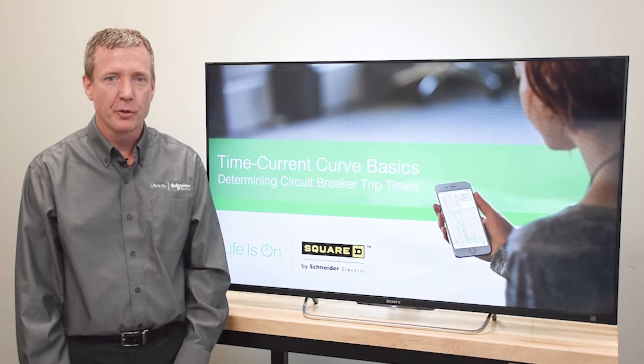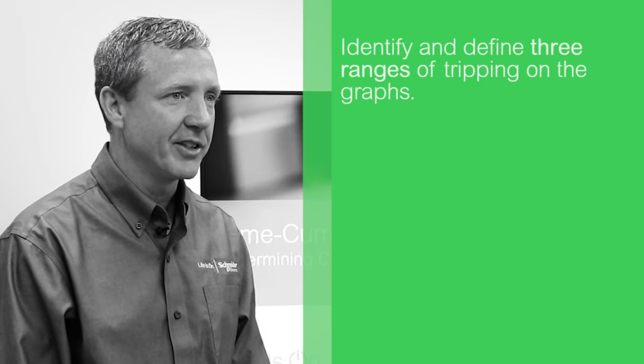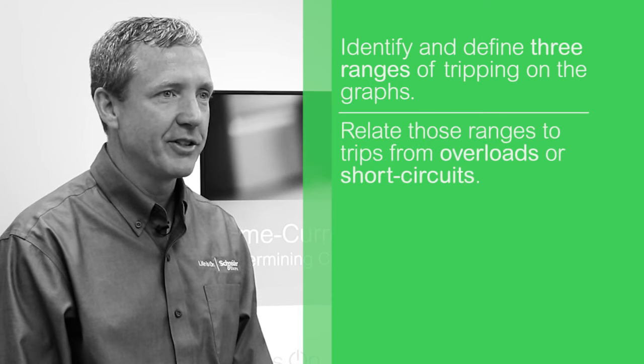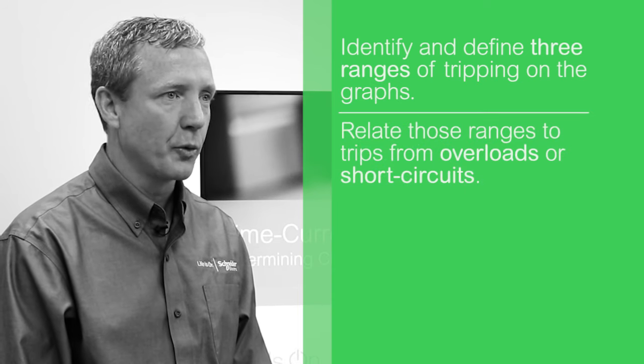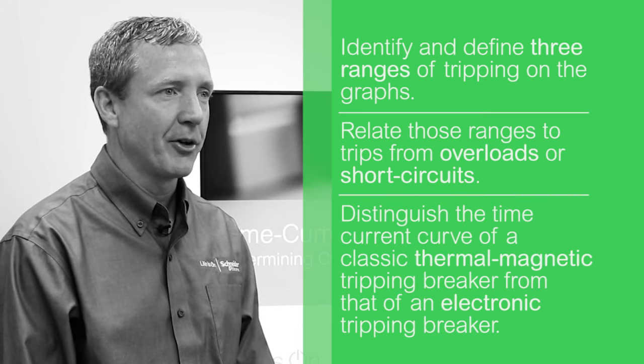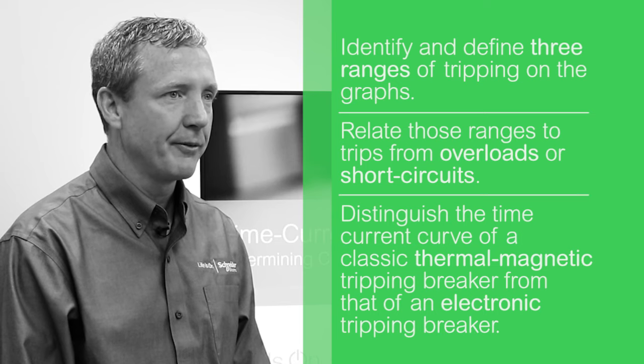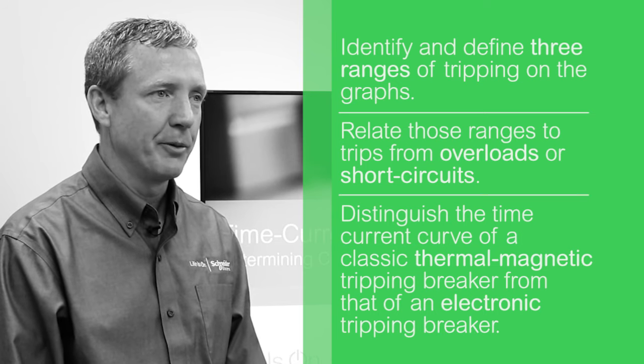After this course, you will be able to identify and define three ranges of tripping on the graphs, and relate those ranges to trips from overloads or short circuits. You will also be able to distinguish the time-current curve of a classic thermomagnetic tripping breaker from that of an electronic tripping breaker.